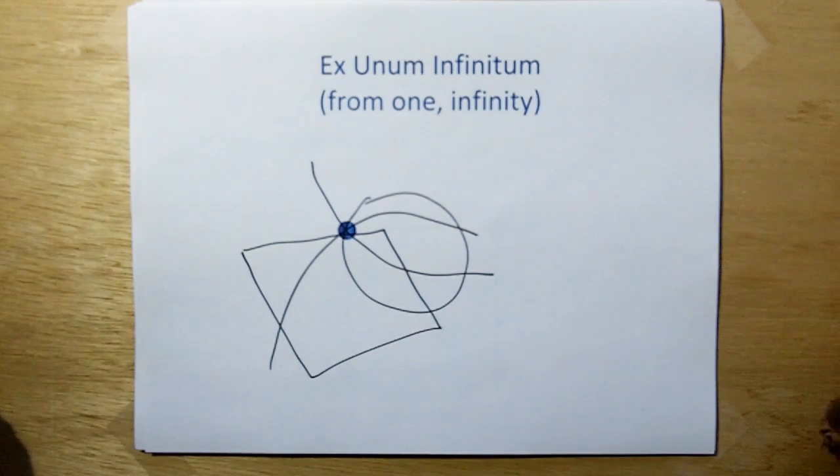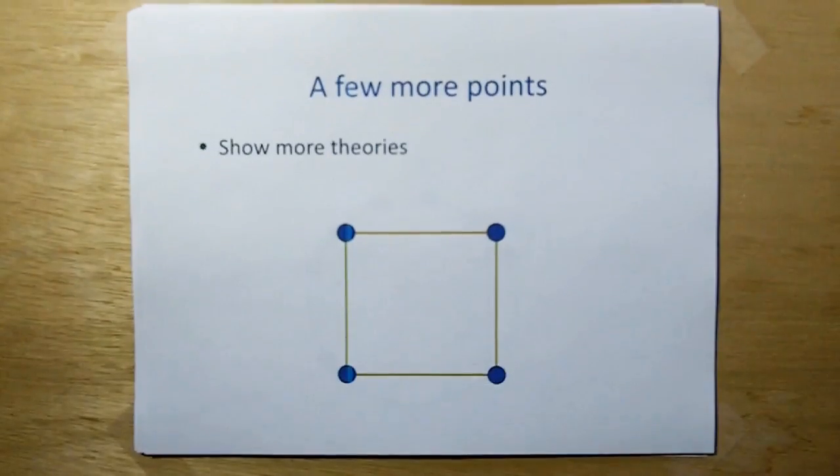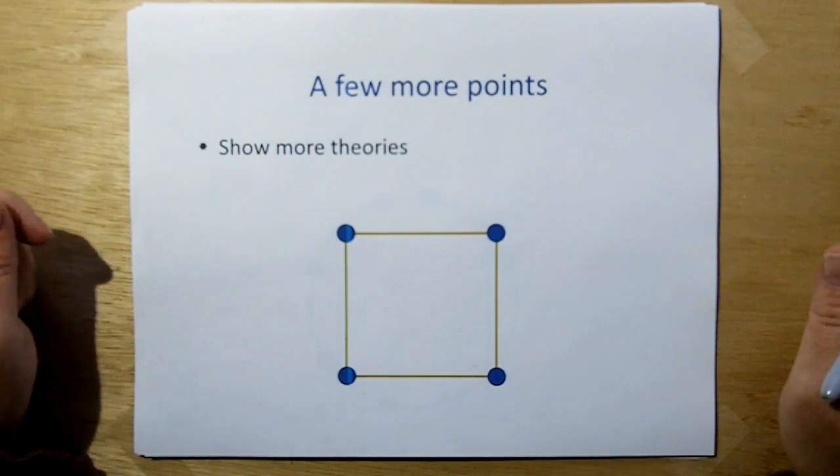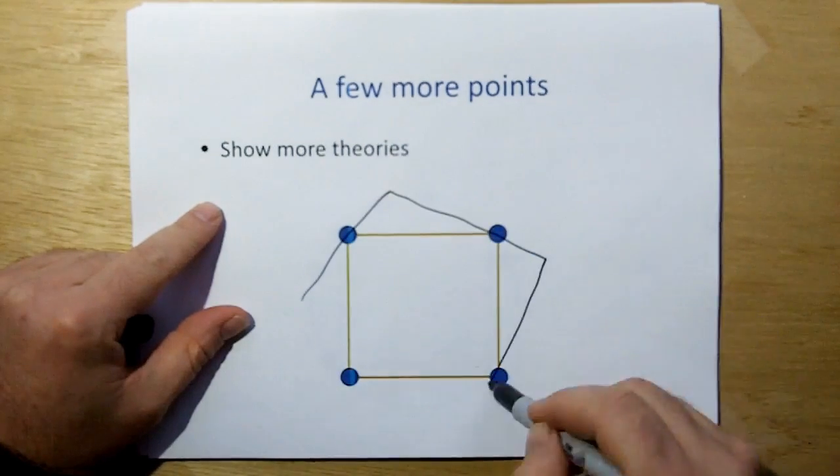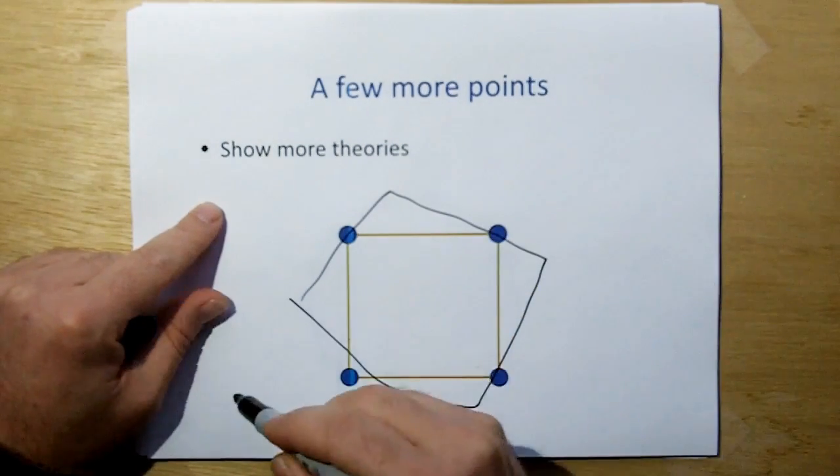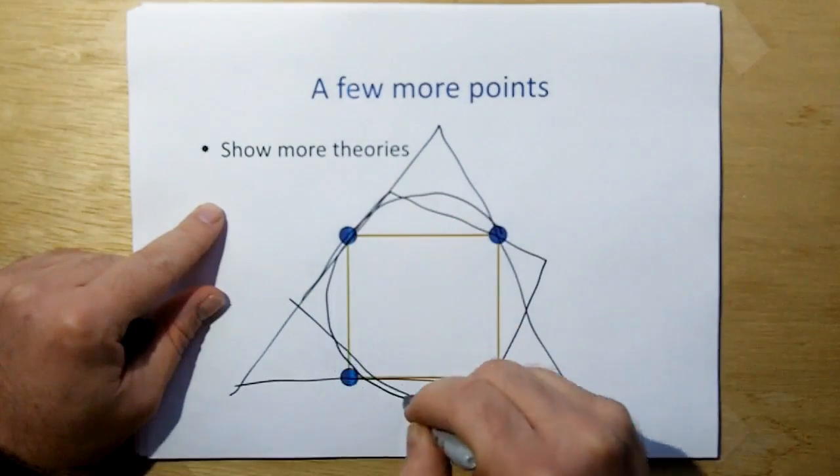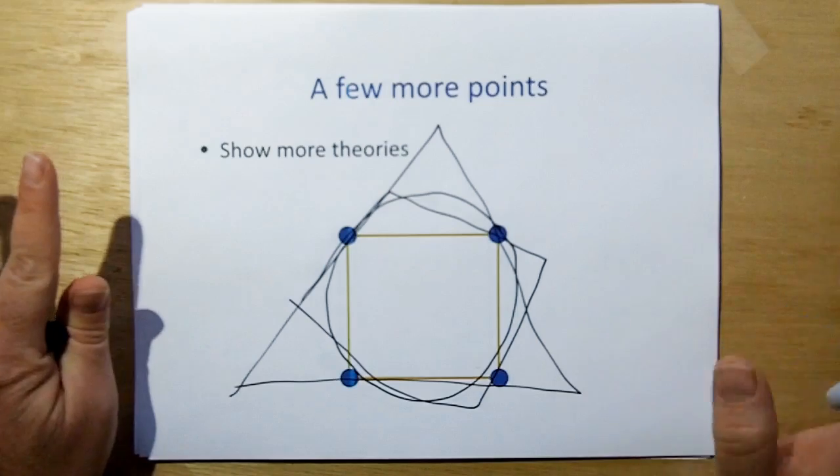One plus one equal two does not tell you much about the universe. You add a few more observations. You start limiting the number of theories that could possibly fit, but you could still have this. You could still have this. You could still have this. But you are limited in your set from before.